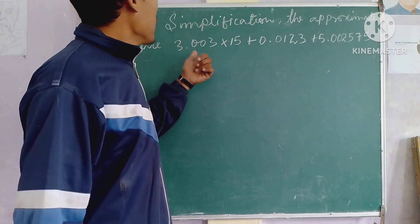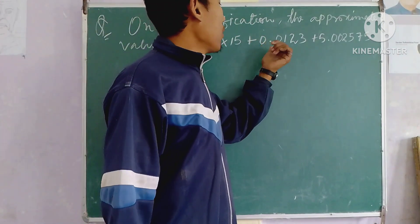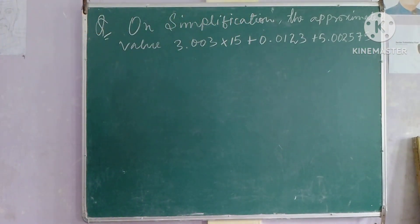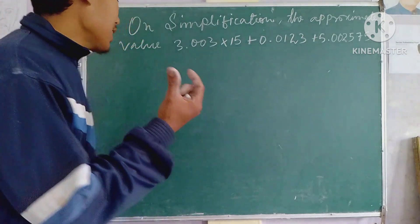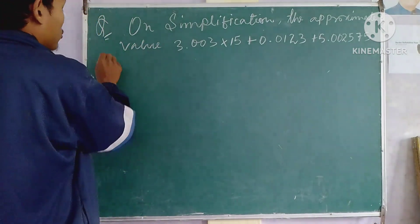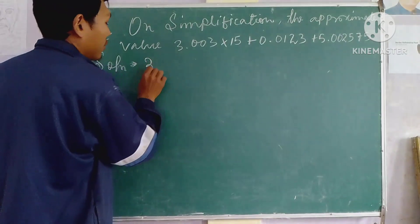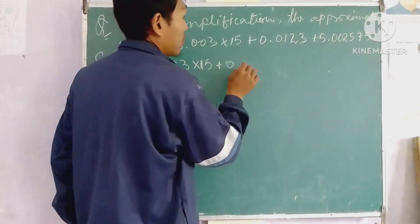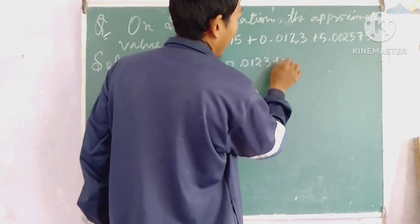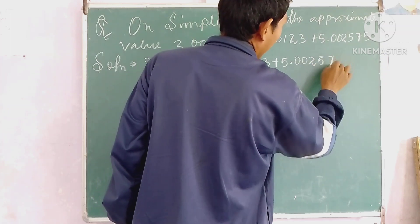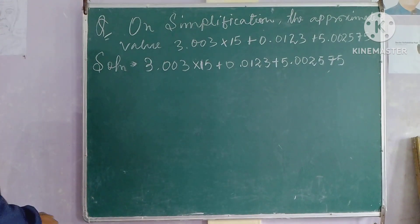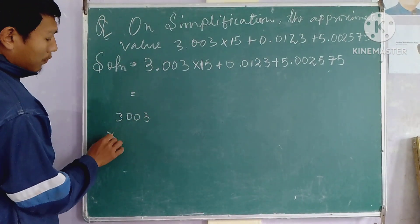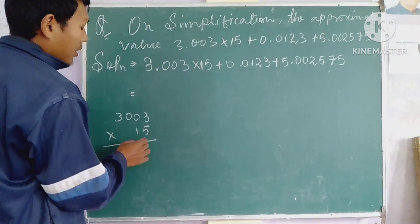Find the approximate value of 3.003 into 15 plus 0.0123 plus 5.002575. First, 56 equal to 5.065. So 3.003 into 15 plus 5.033 into 15 plus 5.0165.